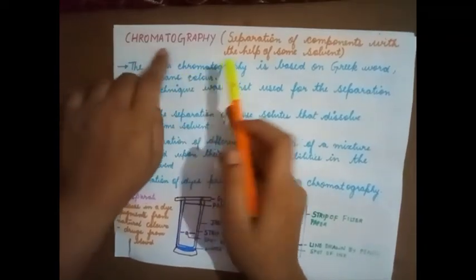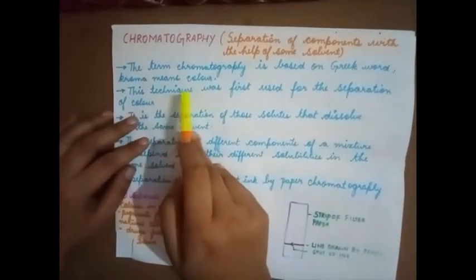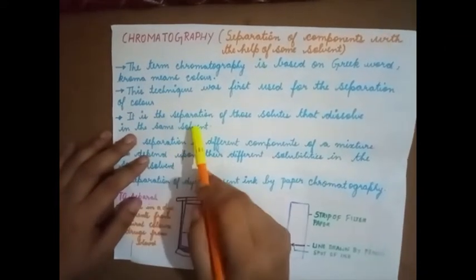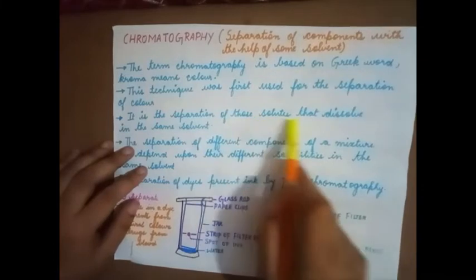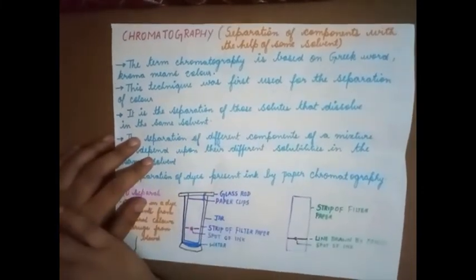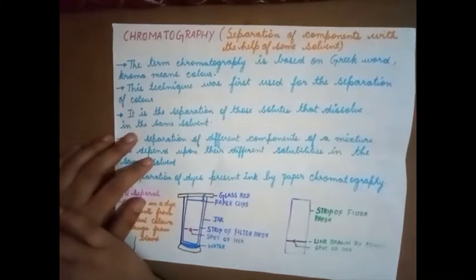It is known as chromatography. This technique was first used for the separation of colors. It is the separation of those solutes that dissolve in the same solvent. Here we see a particular dye or color is made up of many other different types of colors.